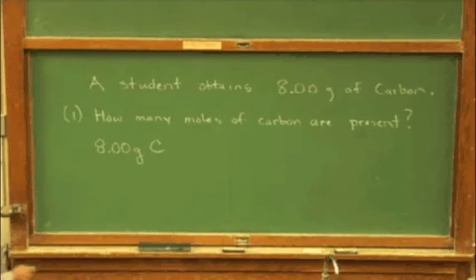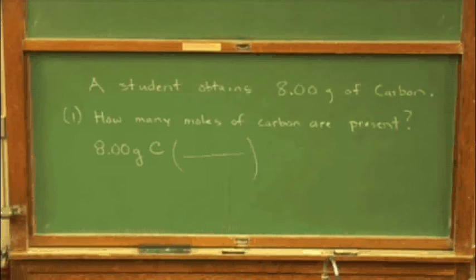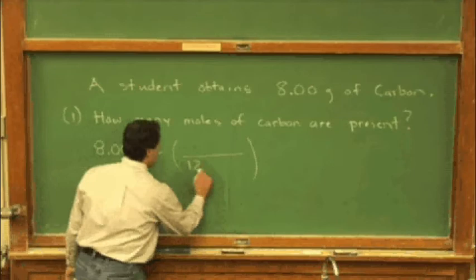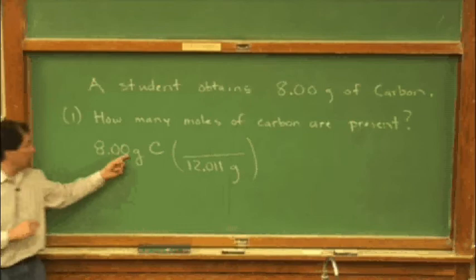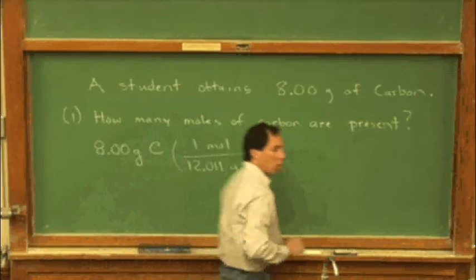Our conversion factor is 12.011 grams per mole. And I'm often asked, do I multiply or do I divide by 12.011? And my honest answer is I don't know. We'll let our units do the work. Our units up there are 12.011 grams per mole. I knew to put the grams on the bottom because the grams need to cancel. I'm letting my units do the work. And up on top, 1 mole.